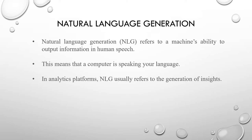Natural language generation is a software process that produces natural language output. Natural language generation is characterized as the subfield of artificial intelligence and computational linguistics that is concerned with the construction of computer systems that can produce understandable text in English or other human languages from some underlying non-linguistic representation of information. It also refers to a machine's ability to output information in human speech. This means that a computer is speaking your language.